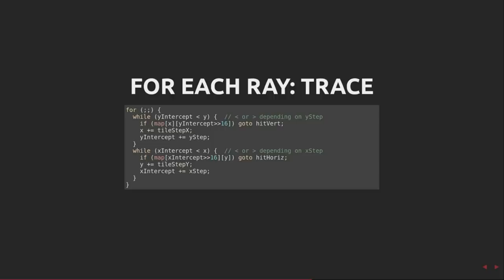The first while loop is looking for interceptions with vertical walls. x is the integer map tile position of x, and y-intercept is the fixed point position along the y-axis of the intersection.